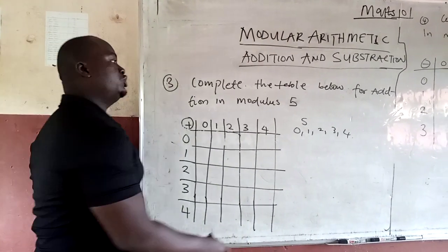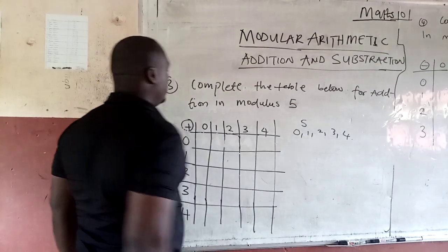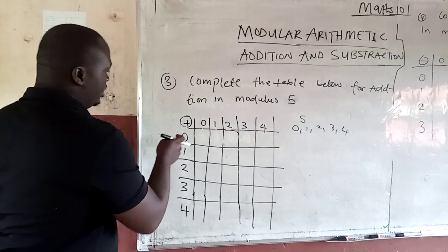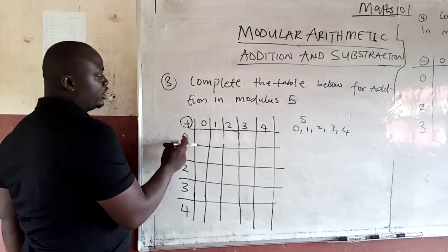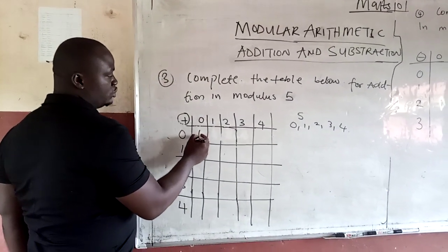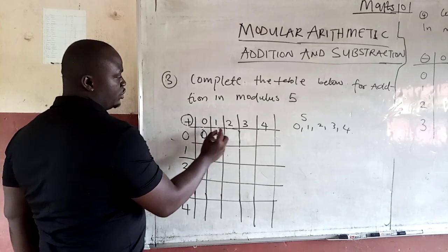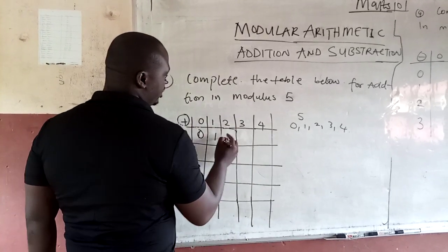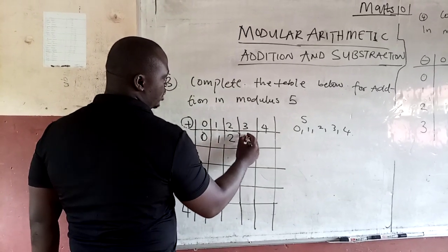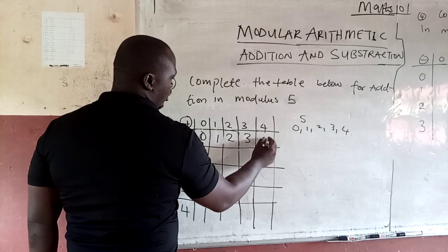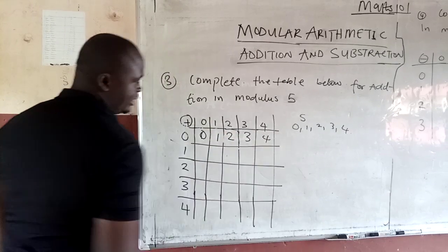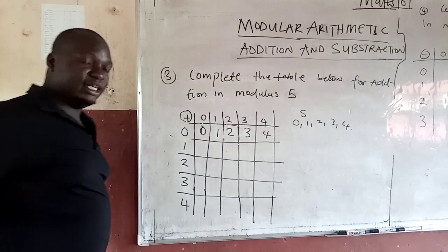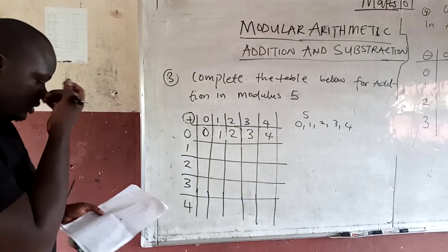So this is the range of values. The only thing we have to do here is: 0 plus 0 is 0. 0 plus 1 will give you 1, 0 plus 2 will give you 2, 3, and 4. If you add anything plus 0, you still get the same number.